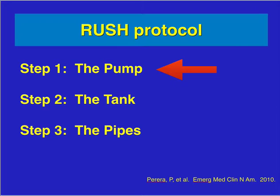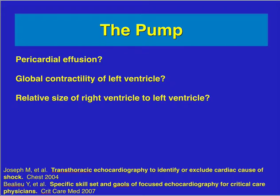We're going to go through the RUSH protocol. I recommend it because it's easy for a learner to follow step by step, but you can do this in any order or method you want. The first thing you look at is the pump: check for pericardial effusion and whether it's causing tamponade, then look at global contractility of the left ventricle and the relative size of the right ventricle to left ventricle.